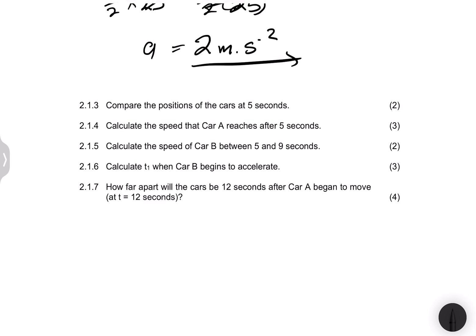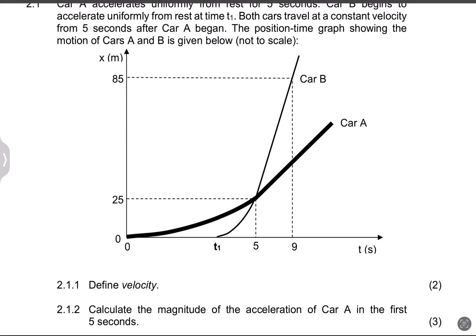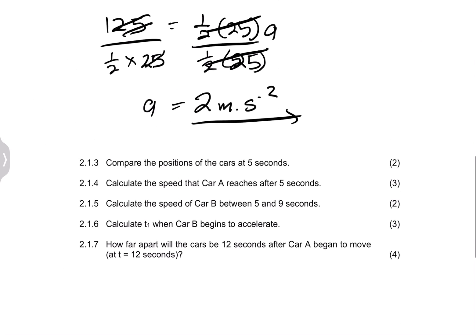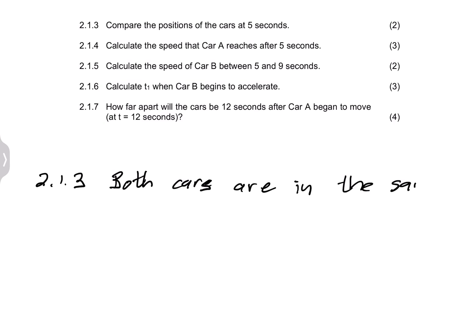The next question says compare the position of the cars at five seconds. If you look at the two cars at five seconds, the graph suggests that they are exactly at the same position. So both car A and car B are at the same position after five seconds.